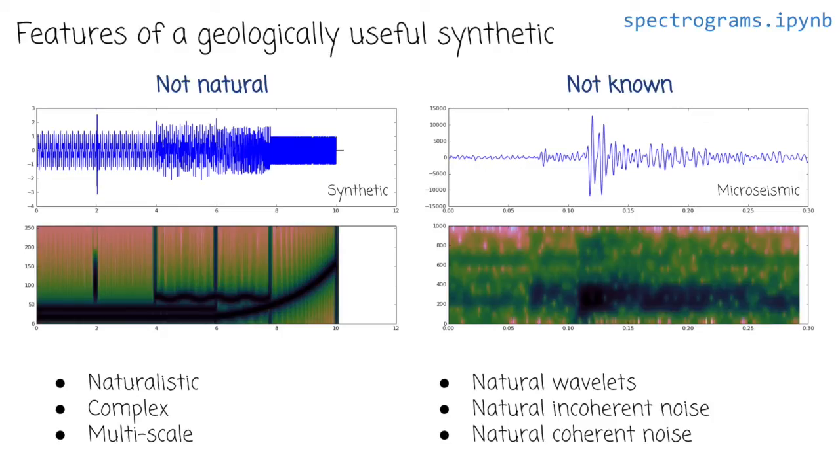And I mentioned a synthetic, I feel like synthetics are great because we know exactly what went into them, but they're not very natural. Natural events, on the other hand, are great because they're natural and they're realistic, so to speak. Well, they're real, but we don't know what went into them. We don't know what caused them.